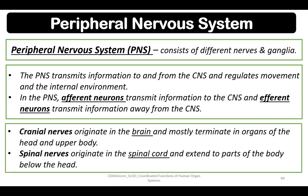The peripheral nervous system, or PNS, consists of different nerves and ganglia. The PNS transmits information to and from the central nervous system and regulates movement and the internal environment. Afferent neurons transmit information to the CNS, while efferent neurons transmit information away from the CNS.